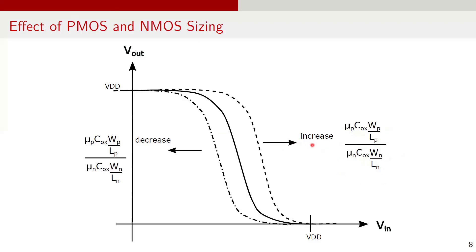When the ratio is increased, the VTC curve shifts to the right. This is because PMOS is stronger than the NMOS, and a stronger PMOS pulls the output voltage towards VDD for a longer duration, meaning the inverter output remains at a logic high for a longer period of time. When the ratio decreases, the PMOS gets weaker compared to NMOS, and this causes the output voltage to be pulled to logic low much faster, transitioning from high to low more quickly. Therefore, the sizing of the PMOS and NMOS directly impacts the switching characteristics of the CMOS inverter, such as the rise and fall times of the output voltage.